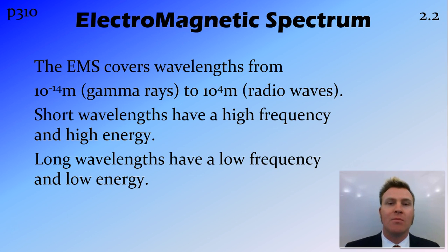The electromagnetic spectrum goes from gamma rays having the shortest wavelength at 10 to the minus 4 meters, so super small, up to radio waves with the longest wavelength of 10 to the 4.